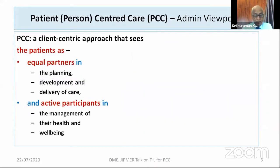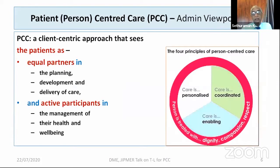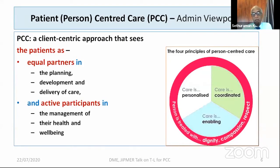The first is the administrative viewpoint. Patients are equal partners and active participants. Based on that, there are four cardinal principles of patient-centered care from a PCC hospital administration: personalized or individualized care; coordinated care among primary, secondary, tertiary and quaternary care, both vertical and horizontal; enabled — the patient and family caretakers at home must be enabled to continue care; and the fourth, most important: care offered with dignity, compassion, and respect to the patient and family.